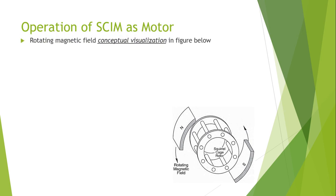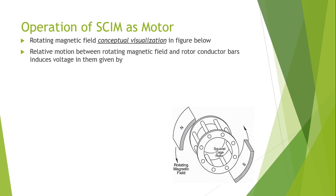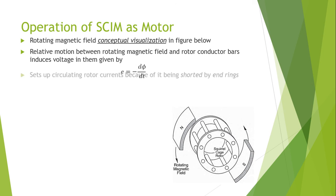Now I will discuss the operation of a squirrel cage induction machine as a motor. The rotating magnetic field can be conceptually visualized from the figure: the squirrel cage rotor and the permanent magnets with north and south poles. The relative motion between the rotating magnetic field and the rotor conductor bars induces a voltage in them, given by the formula: e = dΦ/dt.